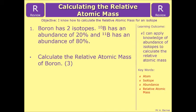It says boron has two isotopes. 10B has an abundance of 20% and 11B has an abundance of 80%. Calculate the relative atomic mass of boron. That ends this video.